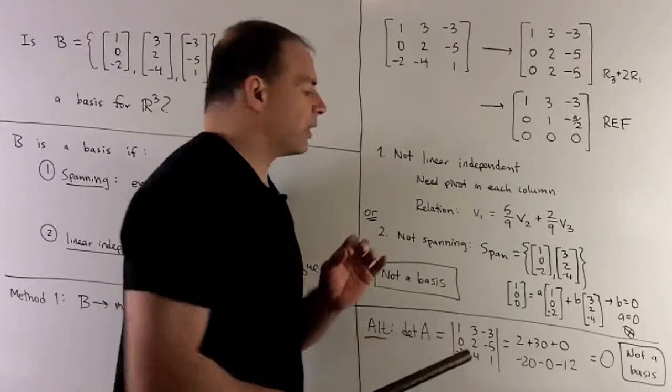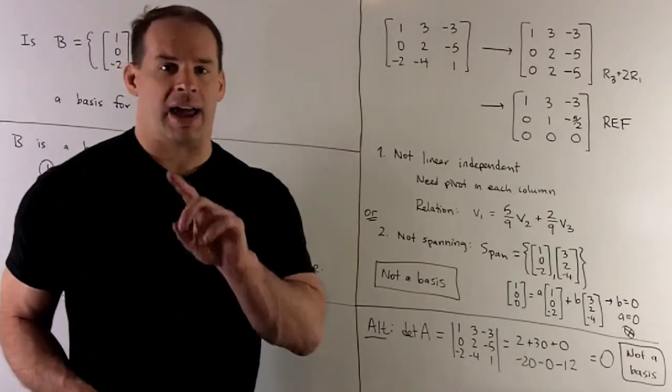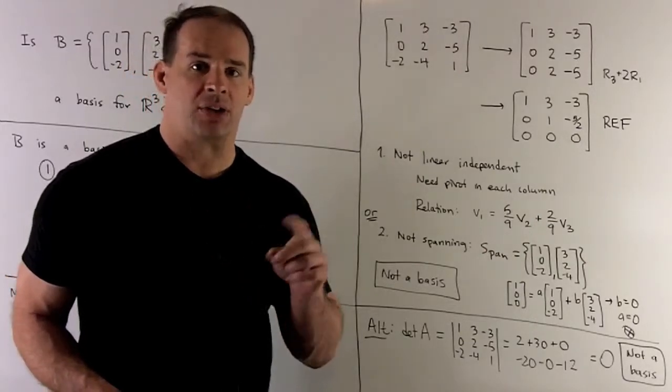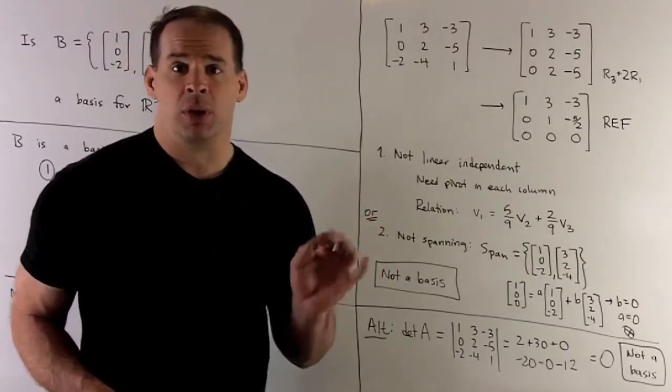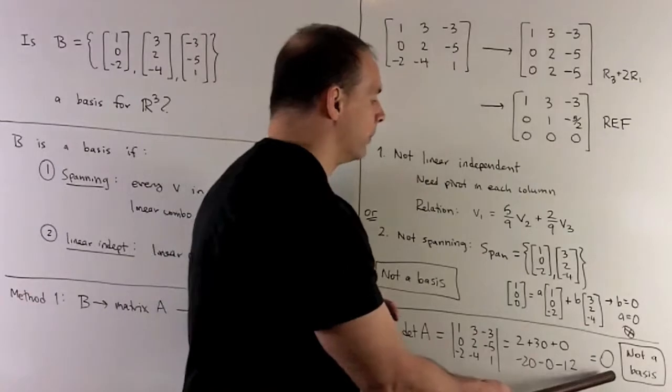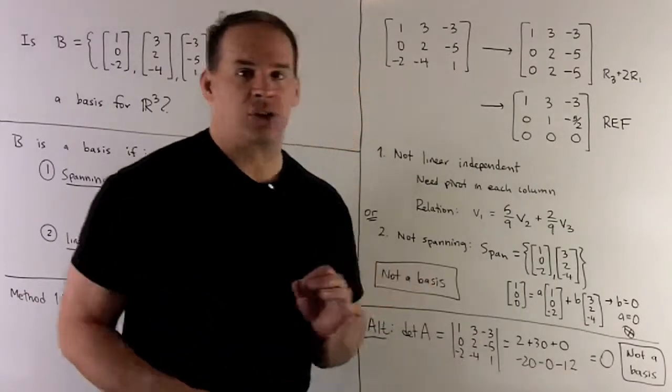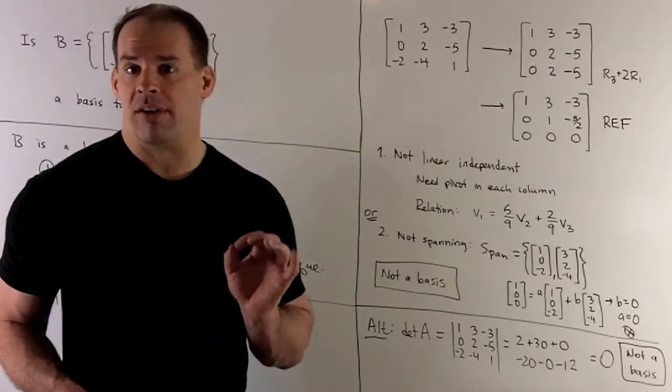Since we have a 3×3 matrix, we can use the rule where we multiply down three diagonals and subtract the other three diagonals. The result is 0, which means our three vectors are linearly dependent, and we don't have a basis.